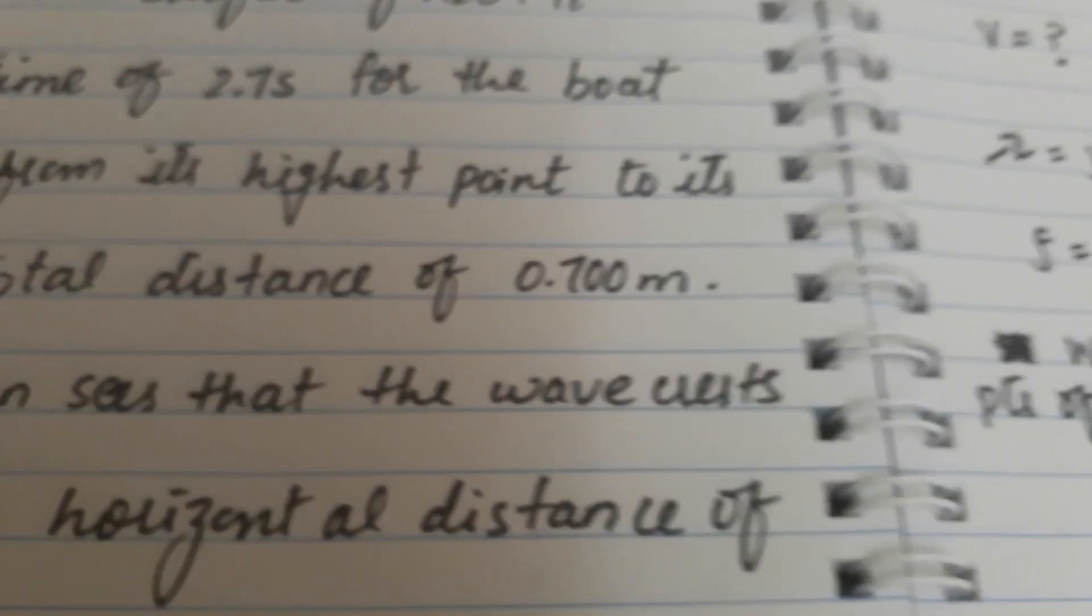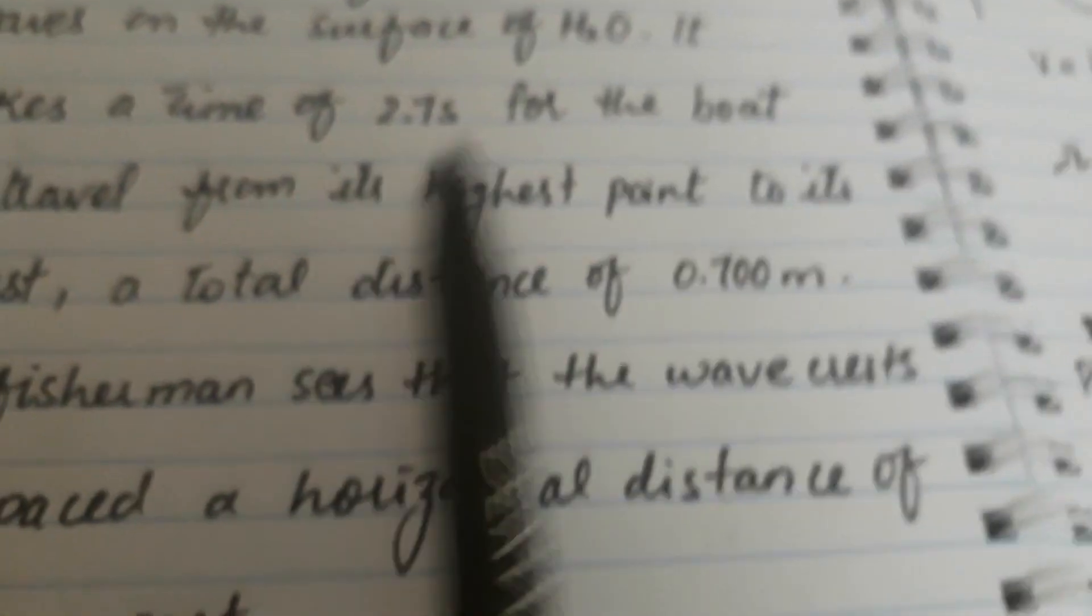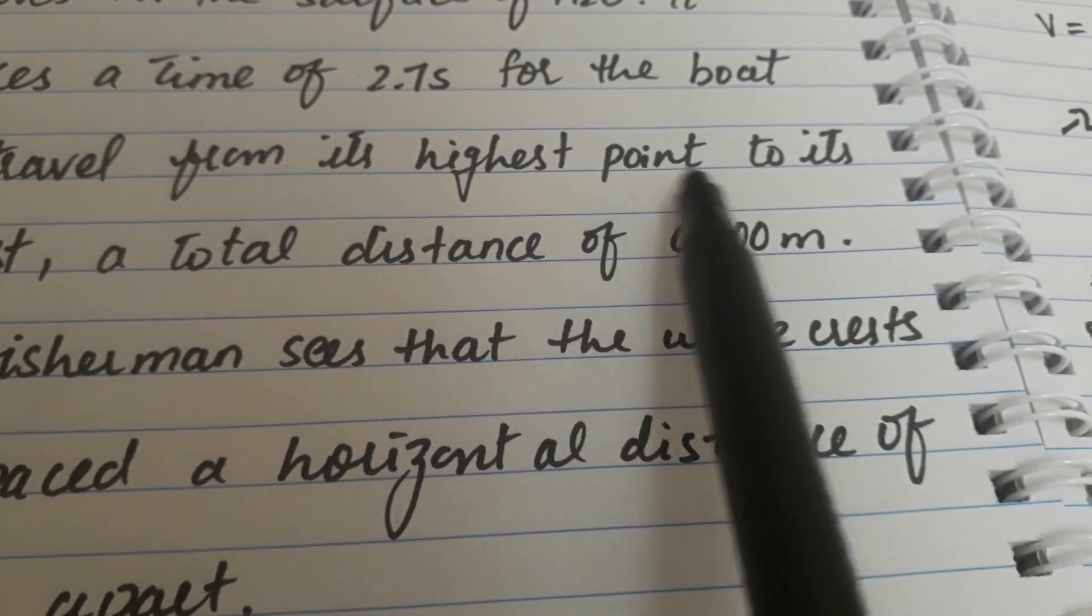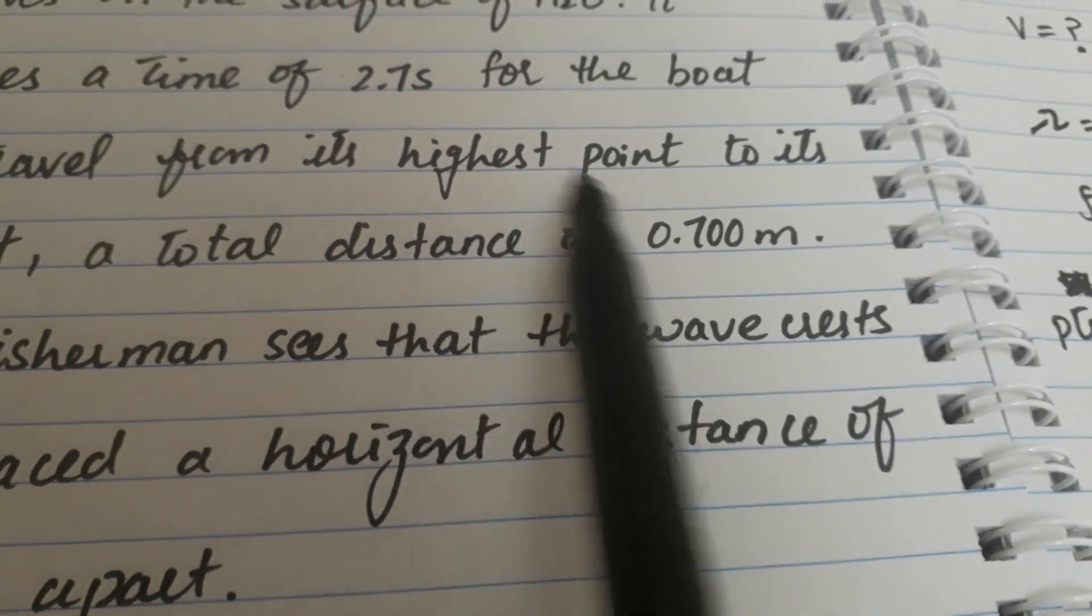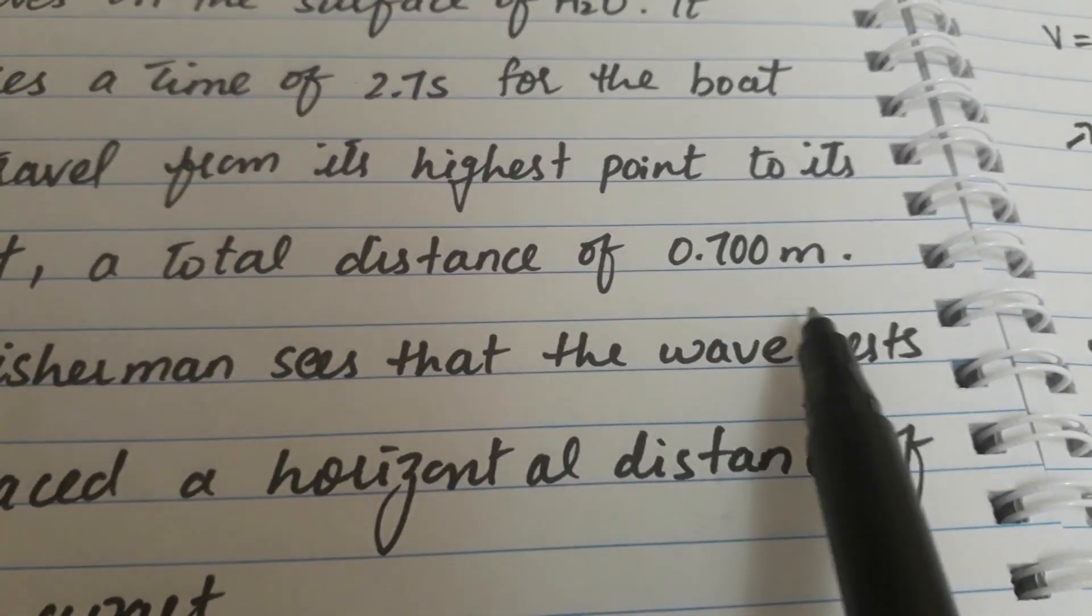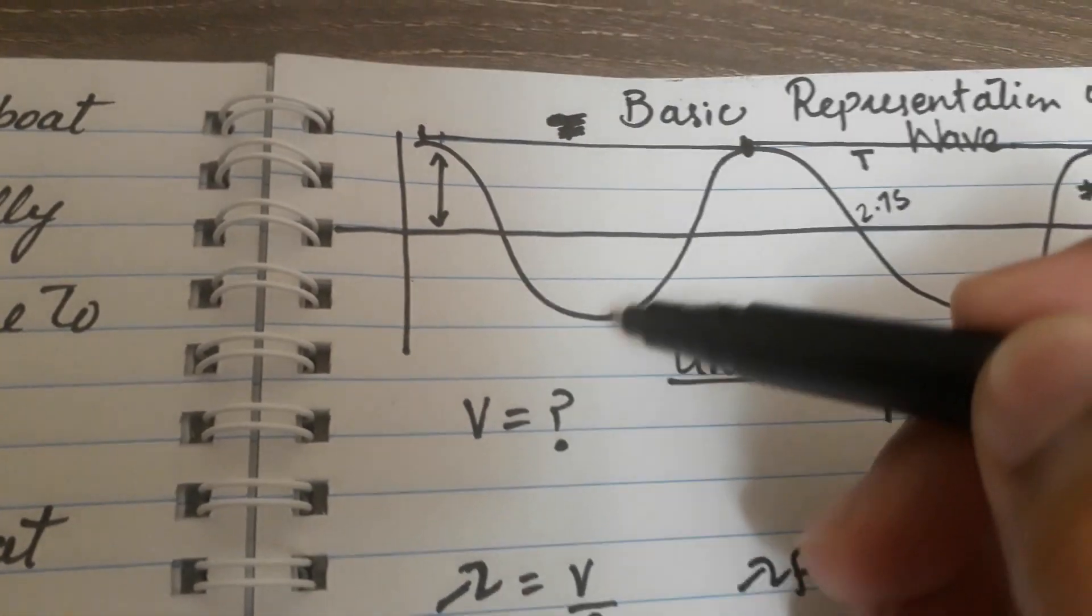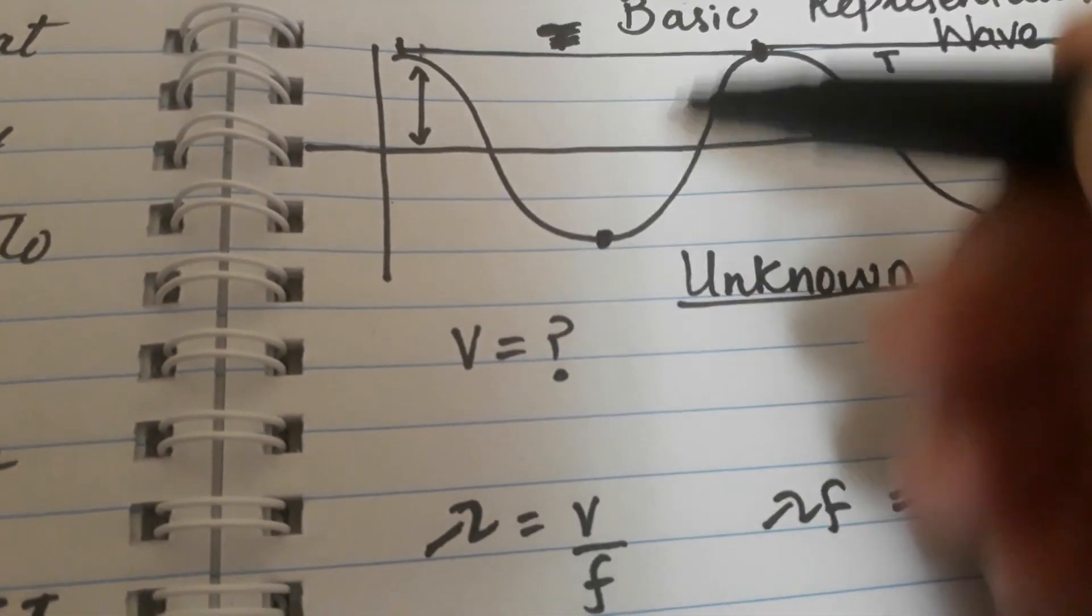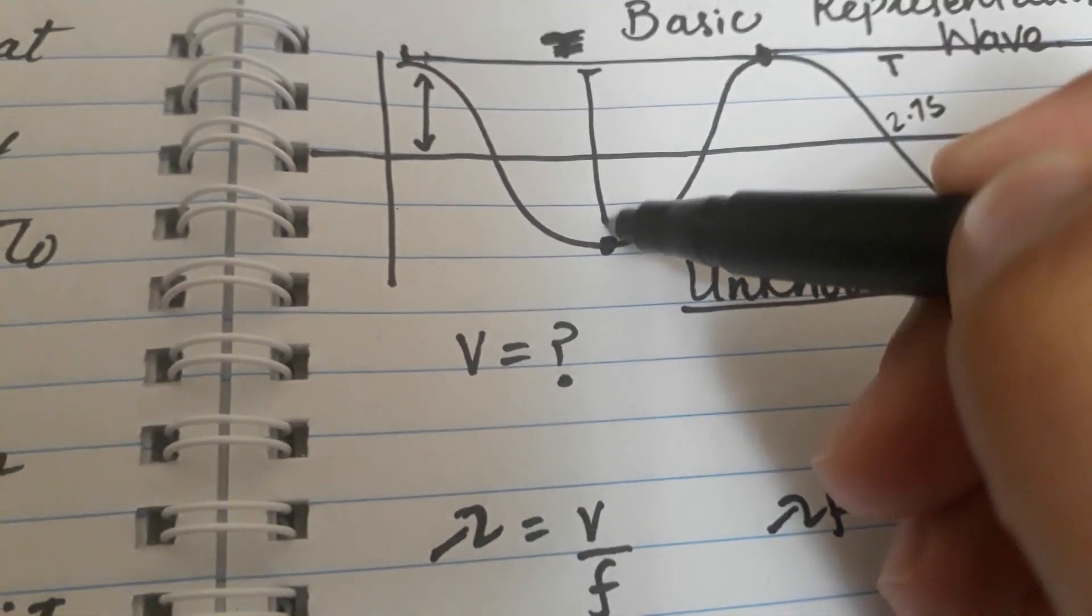Now I have to find the amplitude. I know from the question that the boat travels from its highest point to its lowest point, a total distance of 0.7 meters.